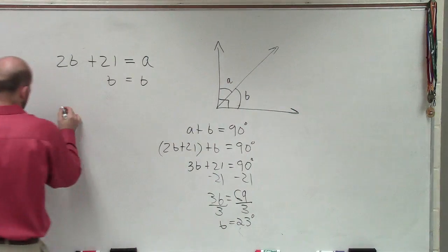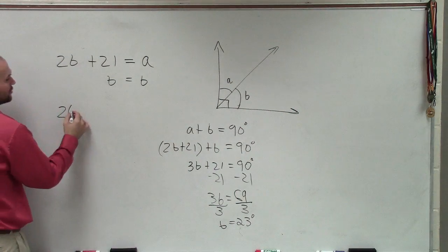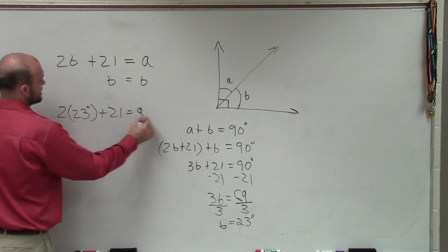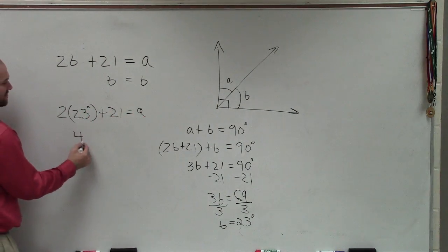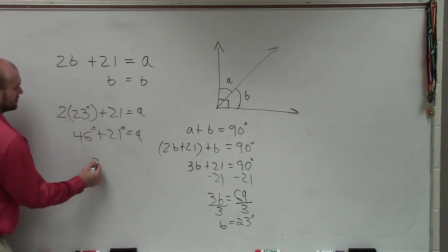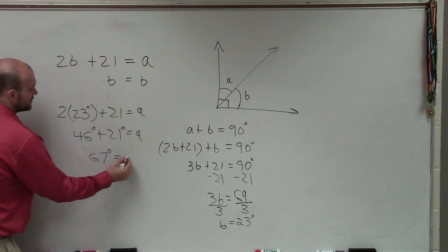So now what we have to do is we have to go back and plug in the measure of angle B, which is 23 degrees plus 21 equals A. Well, 2 times 23 is 46 plus 21 equals A. 67 degrees equals A.